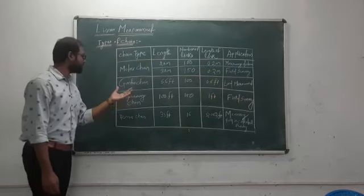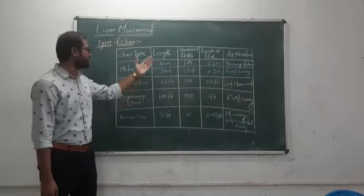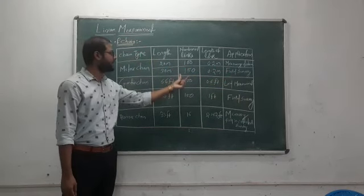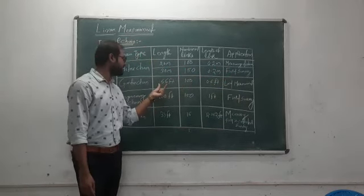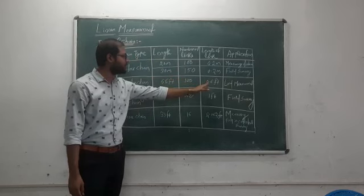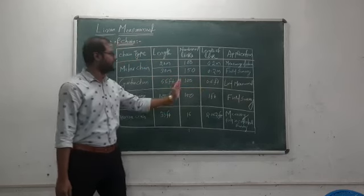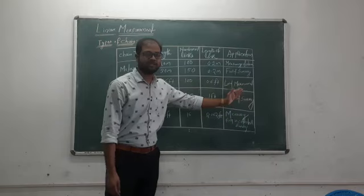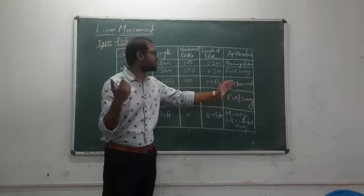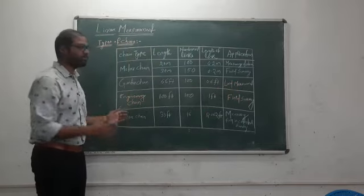Gunter's chain length is 66 feet and it comprises 100 links. If we divide that, we get each link value as 0.66 feet. It is widely used in land measurement. For example, surveyors use this chain for land measurement.